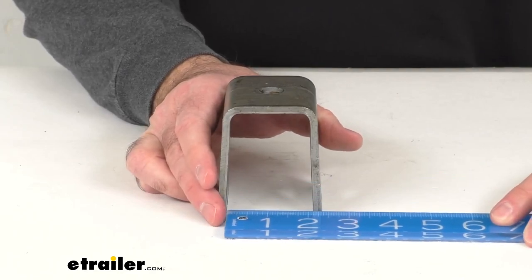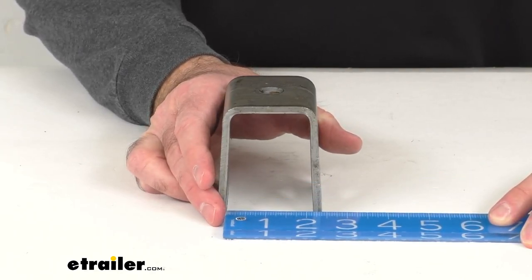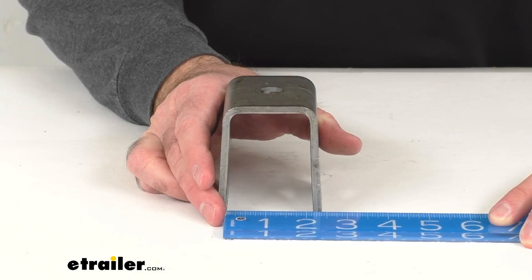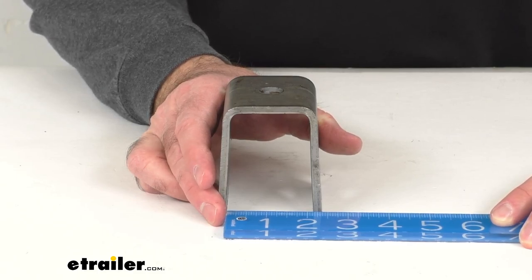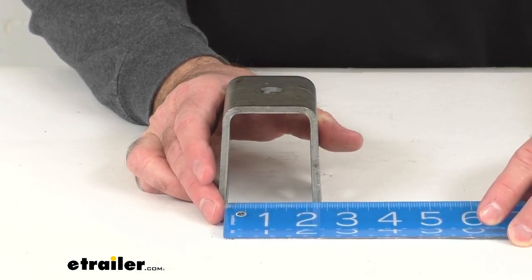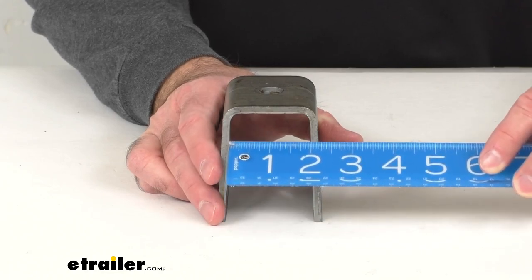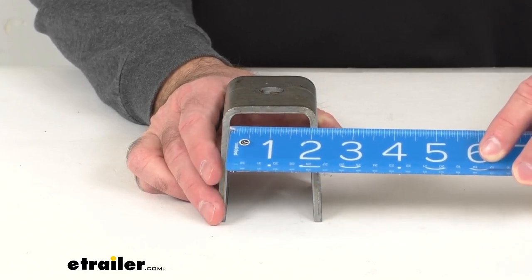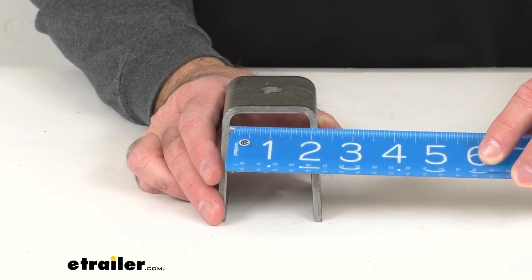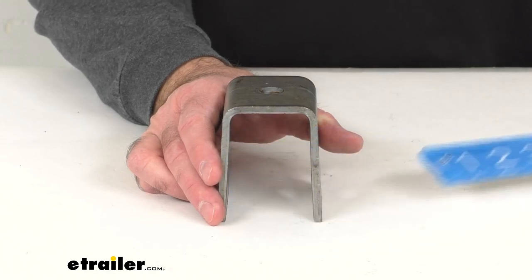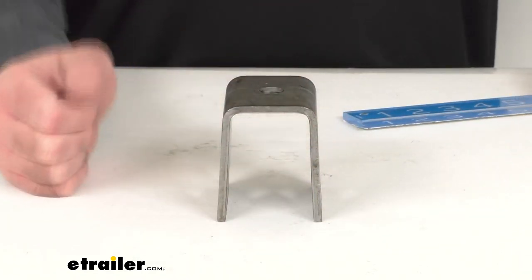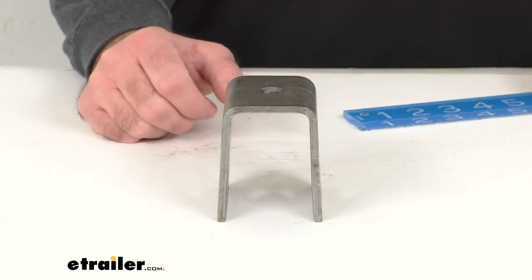As you can see, the opening measurement there inside edge to inside edge is about two inches. That's going to narrow as we move up here to about one and seven eighths inches at the top. So this is going to fit a one and three quarter inch wide double eye spring perfectly.